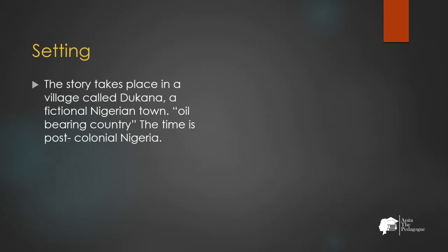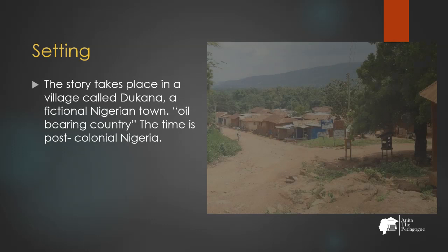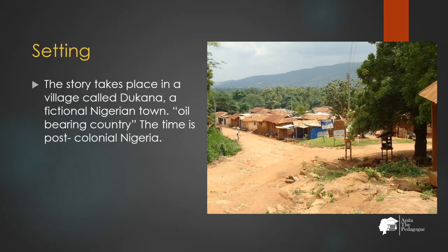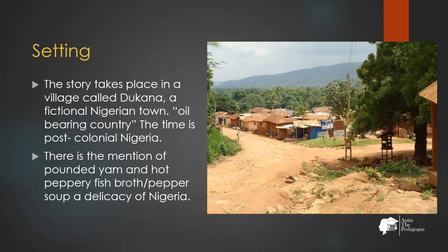The story takes place in a village called Dukana, a fictional Nigerian town in an oil-bearing region. The time is post-colonial Nigeria, as evidenced by mentions of Nigerian delicacies like pounded yam and hot pepper fish broth, or pepper soup. We can say that the story is set in Dukana, which is probably in Nigeria, reflecting our author's own Nigerian background.